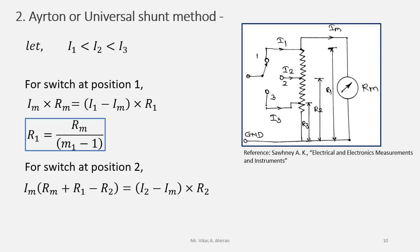Therefore r2 equals r1 plus rm upon m2. Similarly, if you will write the equation for switch at position 3, then we will get the final equation for r3 as r3 equals r1 plus rm upon m3.